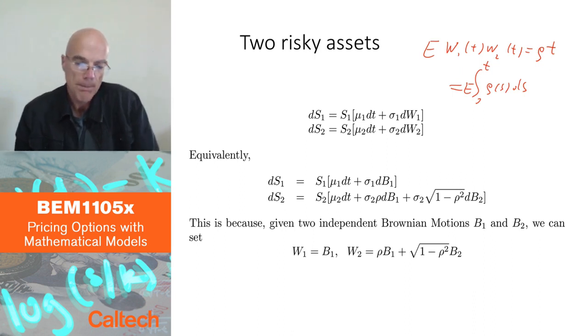So this would be a typical model, but sometimes people prefer to model everything with independent Brownian motions rather than correlated Brownian motions, in which case this second model would be appropriate. Take two independent Brownian motions b1 and b2, and then the first line looks the same, just model the first stock the same way as here, except I replace w1 by b1, and then the second stock model it as sigma 2, but then put rho db1 plus square root 1 minus rho squared db2.